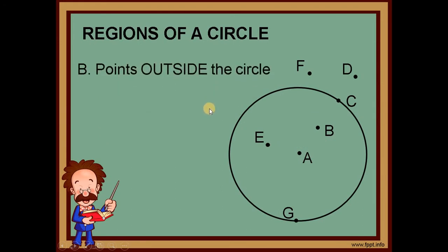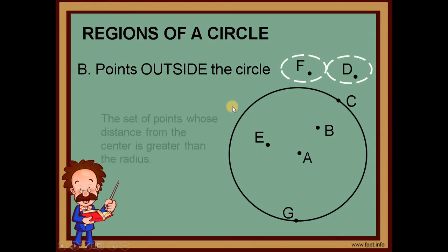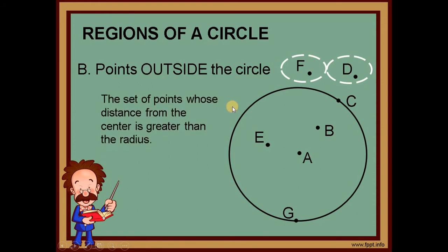Points outside the circle — ito yung mga points na nasa labas. In our diagram, those are points F and point D. The definition: these are the set of points whose distance from the center is greater than the radius.